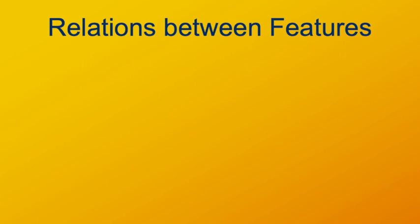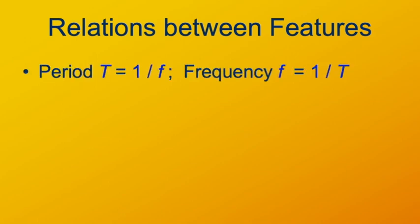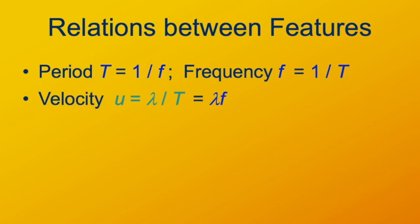The different features of waves are related in a simple fashion. The period and frequency are reciprocals of each other, just as with oscillations. The wave speed equals wavelength divided by period, since velocity is Δx over Δt, and for one complete repeat the distance is the wavelength and the time is the period. Since frequency is one over the period, wave speed also equals wavelength times frequency: u = λf.